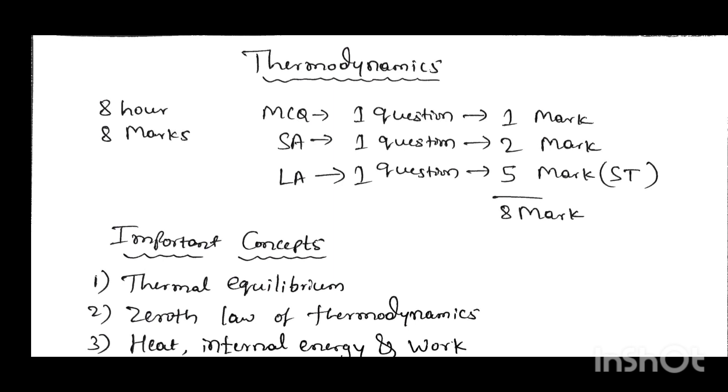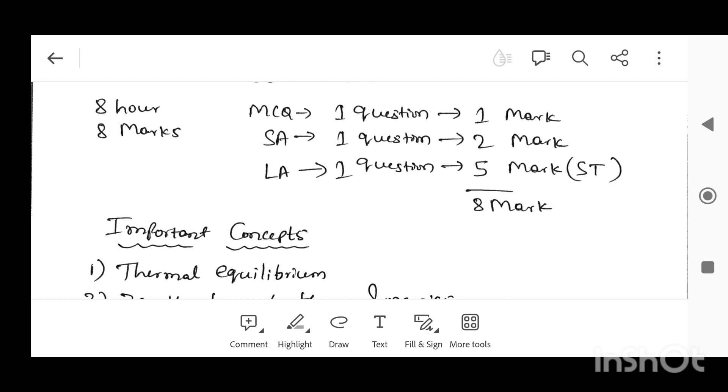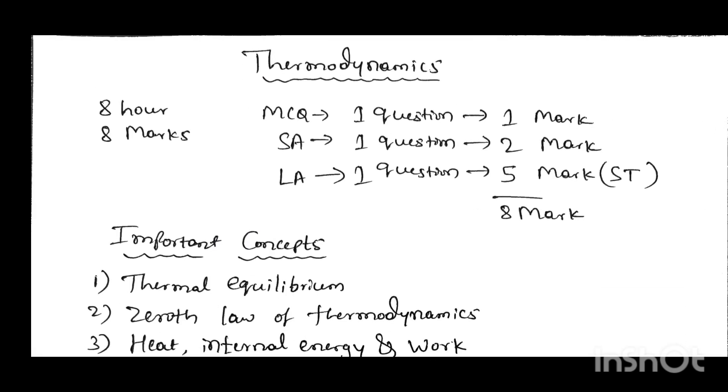Means you are not going to get the whole five mark for this question. You will get split marks. This five mark is distributed in two plus three or three plus two or one plus four. Like that, the question is split into different marks. Totally eight marks from this chapter.